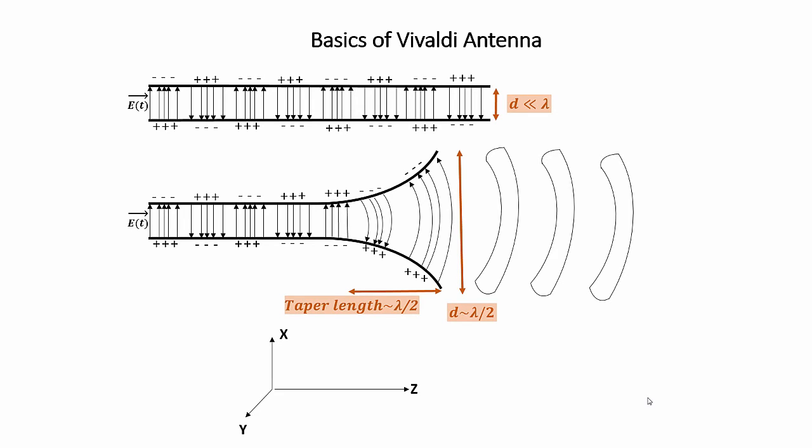Now let's say the Vivaldi antenna axis is along Z axis and we can define the equation of radiation curve by this exponential equation which is x equal to e to the power r times c.